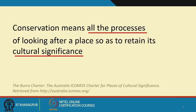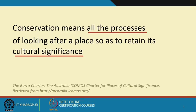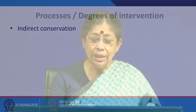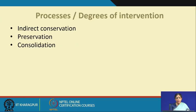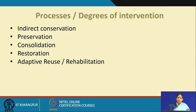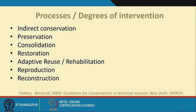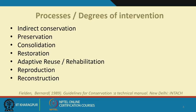Today in our lecture we will discuss various approaches and processes one by one. There may be indirect conservation, preservation, consolidation, restoration, adaptive reuse or rehabilitation, reproduction, and reconstruction. All of these processes come under the broad umbrella of conservation. We will take each one and see what these terms or processes signify.